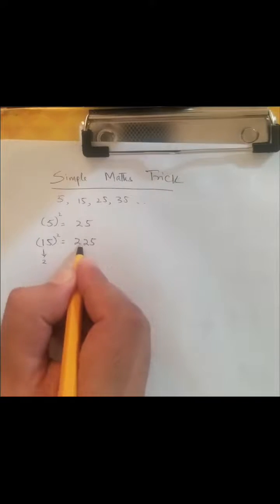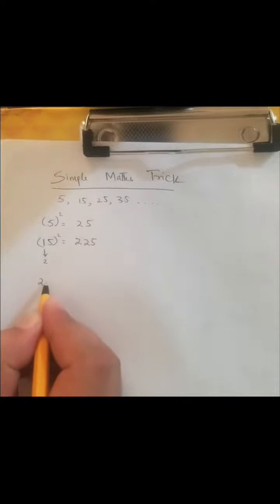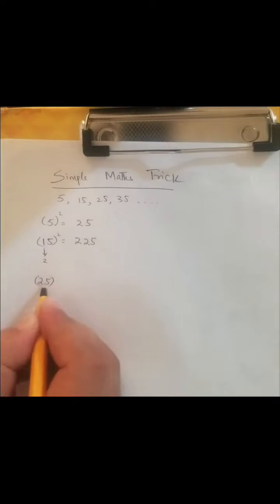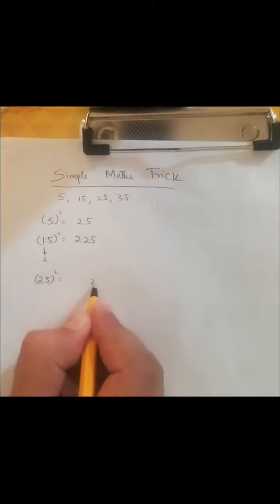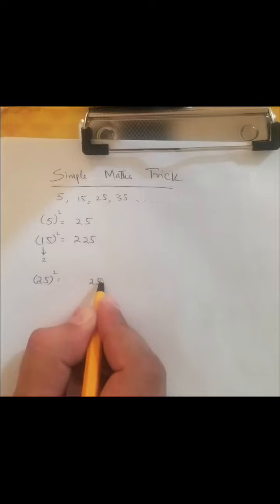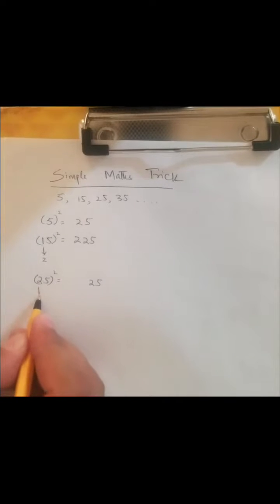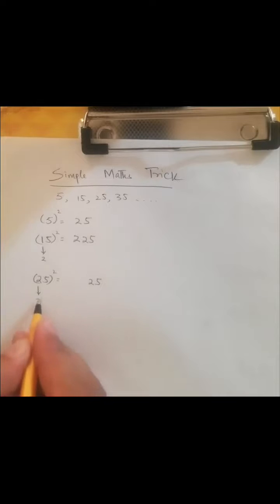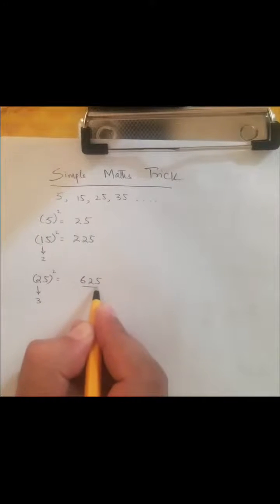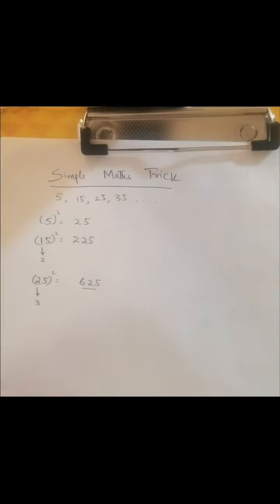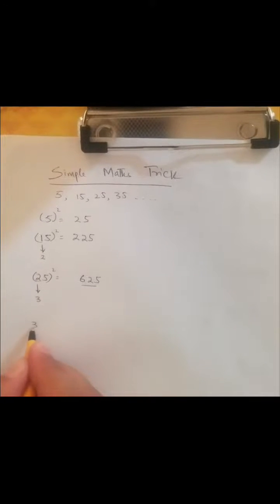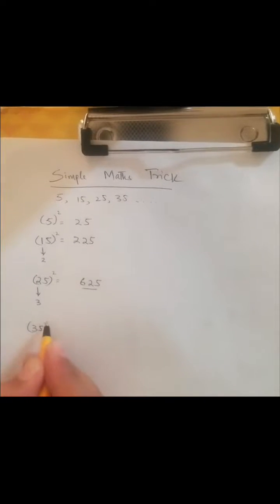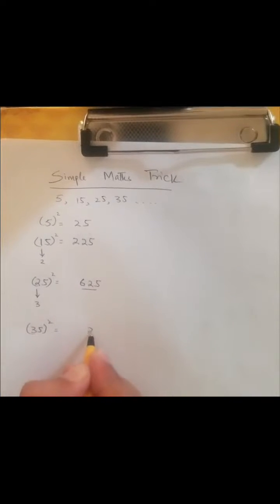So that will be 2, giving 225. Similarly, the square of 25: first write 25, the next number after 2 is 3, so that's 6 - that is the square of 25, which is 625. Similarly, 35 whole square: first write 25, then